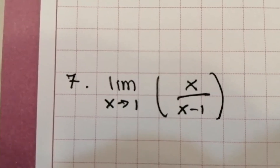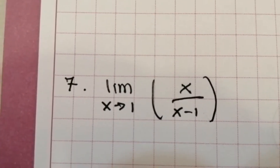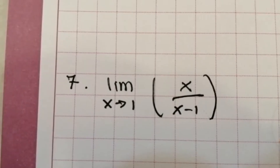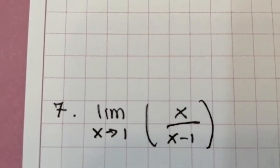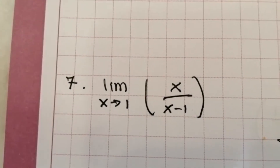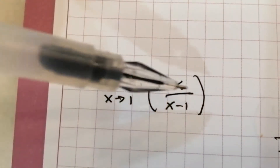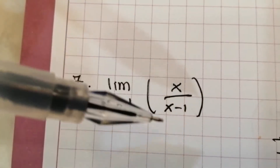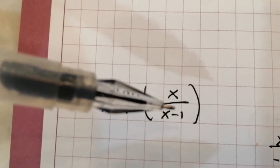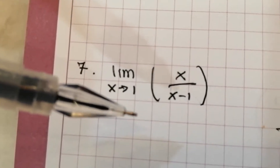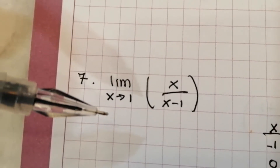The question here is the limit of x over x minus 1 as x approaches 1. This one cannot be simplified — we cannot factor to simplify. So we will use the infinite limits to answer this one.